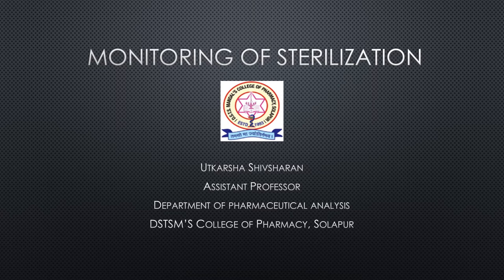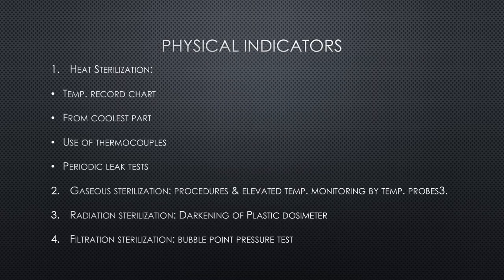To check the assurance of sterilization, monitoring is carried out by means of different types of indicators. We will see them one by one. For physical indicators, if we take the heat sterilization process, a temperature record chart is made for each heat sterilization cycle. This cycle can be maintained for dry heat sterilization as well as moist heat sterilization. It is recommended that the temperature should be taken from the coolest part of the loaded sterilizer for heat distribution and penetration.